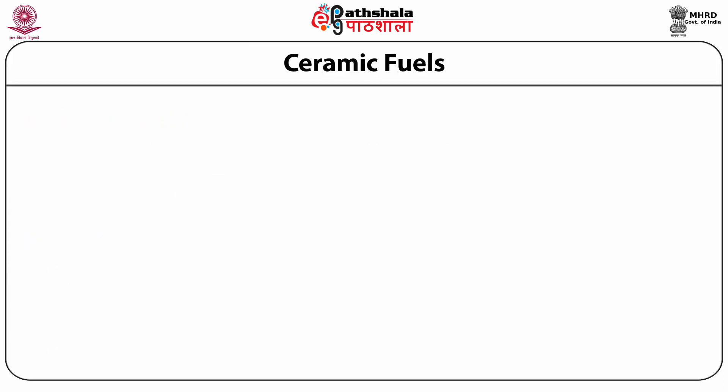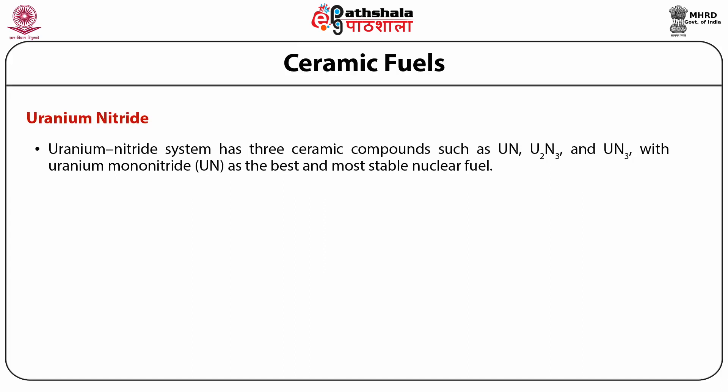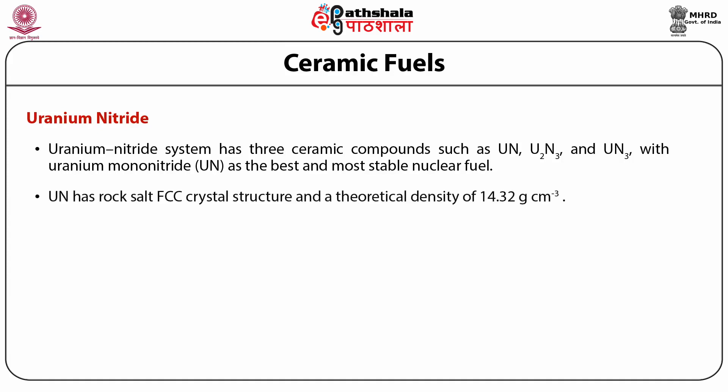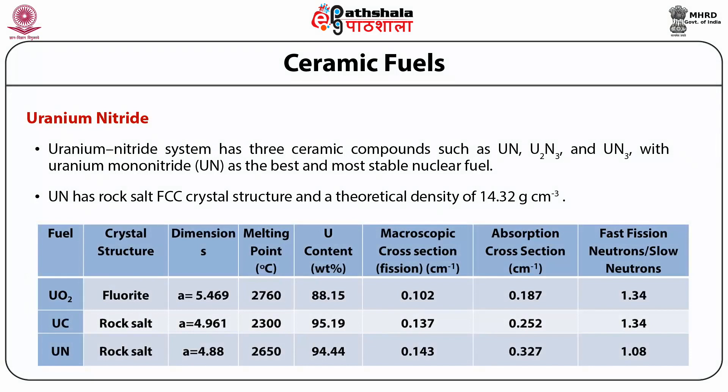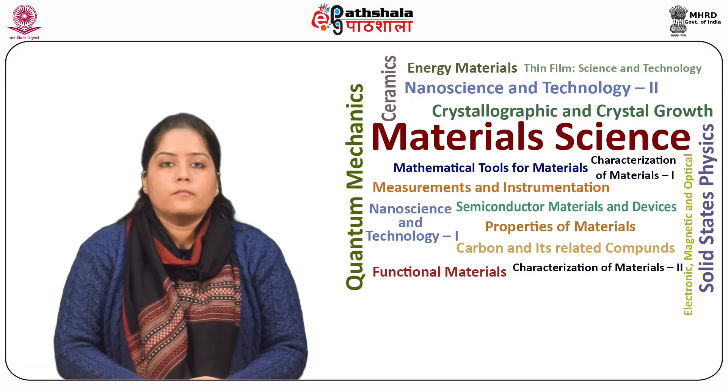The last ceramic fuel we will discuss is uranium nitride. The uranium nitride system has three ceramic compounds: UN, U₂N₃ and UN₃, with uranium mononitride UN as the most stable nuclear fuel. UN has a rock salt FCC crystal structure and a theoretical density of around 14.32 g/cm³. It keeps its stoichiometry up to high temperatures and becomes non-stoichiometric beyond a temperature of 1500 degrees Celsius. The table below summarizes the various features of different uranium ceramic fuels.